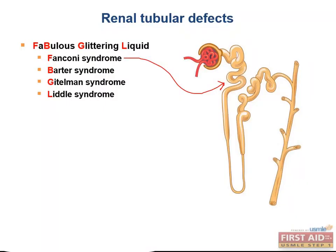This causes increased excretion of nearly all amino acids, glucose, bicarbonate, and phosphate. Causes include hereditary defects like cystinosis and other causes such as ischemia and toxins or drugs like expired tetracyclines.